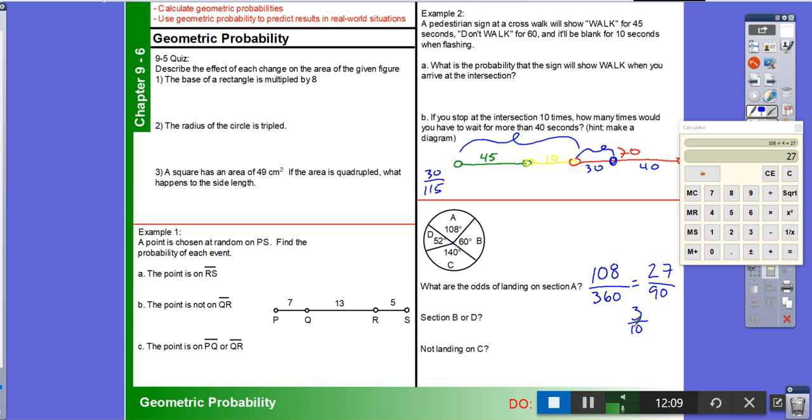What are the odds of Section B or D? So B is 60, D is that. So that's 112 out of 360. 4 conveniently goes into both of them again. So that's 28 out of 90. 2 goes into both of those. So that is 14 out of 45. And so those are the odds of landing on those two sections.